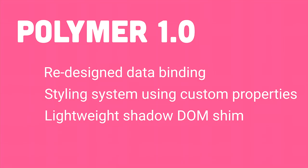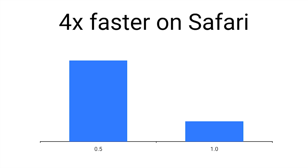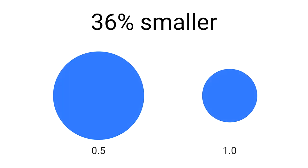At that time, a number of products at Google launched using Polymer in production. How much faster was Polymer 1.0 from 0.5? It was three times faster on Chrome and four times faster on Safari. It was also 36% smaller than 0.5 — a major step forward for the Polymer library.